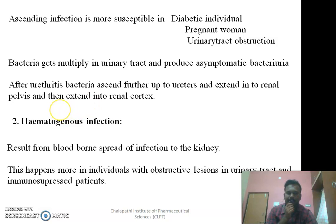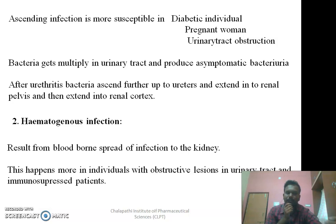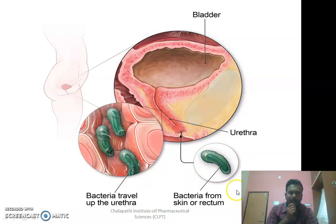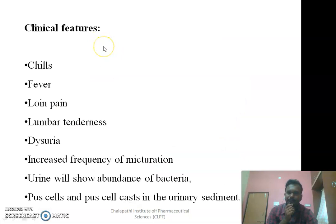Coming to the hematogenous route of infection — it is also known as descending infection. It is infection which is there in the blood. If the individual is suffering from any systemic infection, that bacteria-containing blood will come to the kidneys to get filtered. The bacteria will cause damage to the kidneys, and from the kidneys the infection will move forward to the ureters, bladder, and then urethra. This occurs more in individuals with obstructive lesions in the urinary tract as well as immunosuppressed individuals.